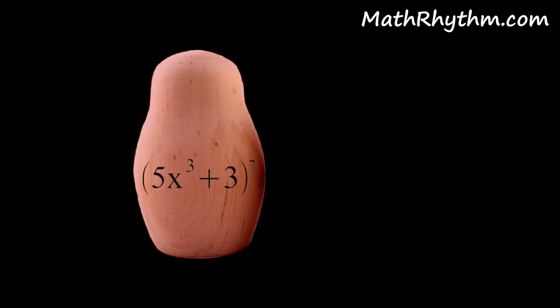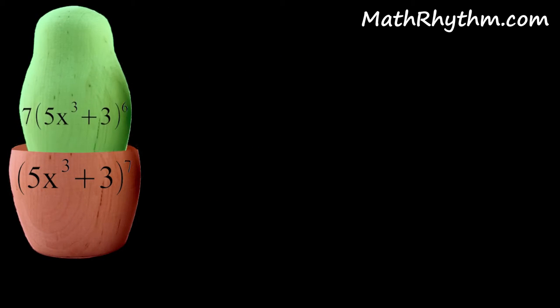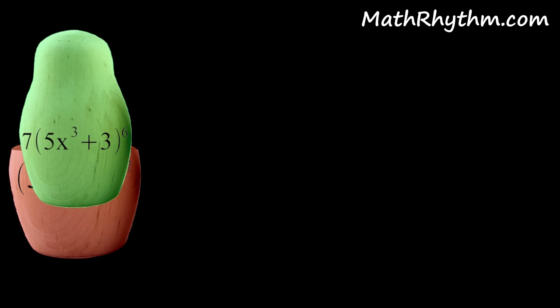This is a nested function. The power of 7 is our outside function, and the polynomial is the inside function. The same rules of calculus in our derivatives still hold, though.